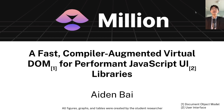Hi, my name is Aiden Bai. I'm a junior at Canvas High School, and I created Million, a fast-compile augmented virtual document object model, or DOM, for performant JavaScript user interface libraries — or essentially, how I made user interfaces faster.